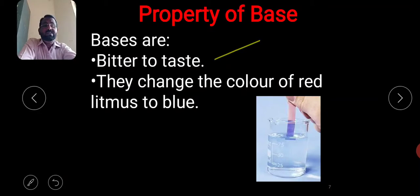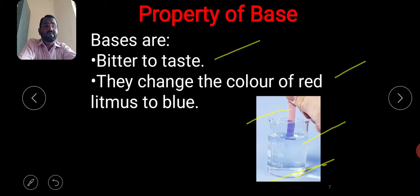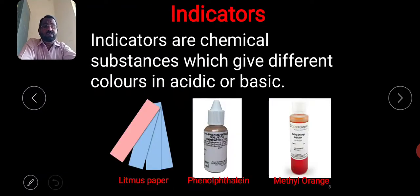Properties of bases: bases change the color of red litmus to blue. In acids it converts blue litmus to red, while bases convert red litmus to blue. You can see in this picture the red litmus is converted to blue in a base solution. When litmus paper is dipped in a base solution, the red litmus is converted into blue.